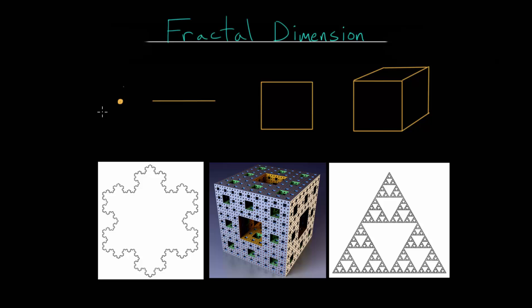For instance, we have a point here and we consider points to be zero dimensional objects. This is a line and lines we consider to be one dimensional. For an object like a square or something in the plane, we consider these to be two dimensional. And for something in space like a cube, this is considered to be three dimensional.